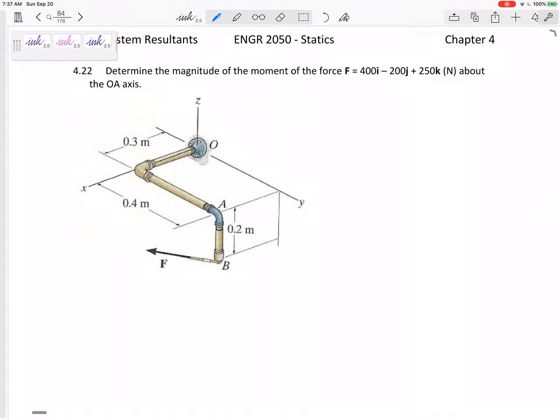Alright, so let's look at this one. Determine the magnitude of the moment of this force 400i - 200j + 250k about the OA axis. So I want the moment about an axis, so I write my equation here: the magnitude is u dot r cross F. This is the moment about axis OA. And this r needs to go from the axis to the force.